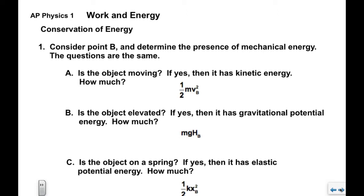Then we're going to look at point B, or the after or the later or the final, or whatever you want to call it, and ask the same three questions to determine the presence of mechanical energy. Now the questions are the same. Of course we're asking about point B instead of point A. So if it's moving at point B then we would say it has kinetic energy at point B. We know that how much is one half mv squared. We would specify v sub b. Is the object elevated? Again with reference to h naught. If it is then it has gravitational potential. How much? mgh sub b.